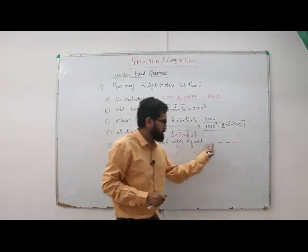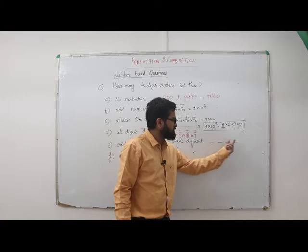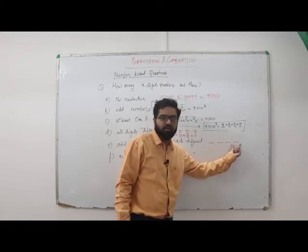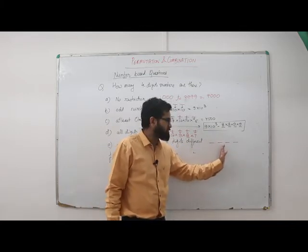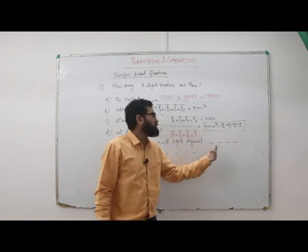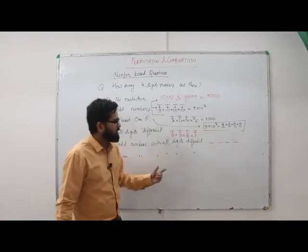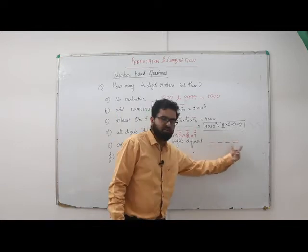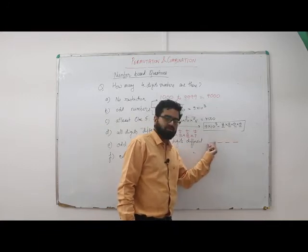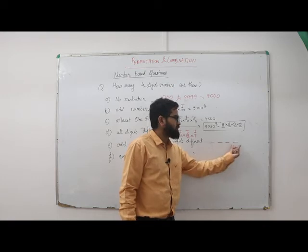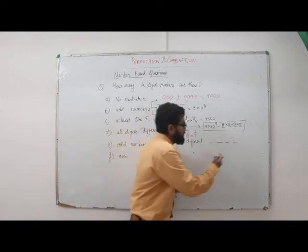Now question e: odd numbers with all digits different. If we start from the leading digit, we don't know yet whether the number will be odd. The number of choices at the units place depends on which digits were used earlier — making it complicated. So instead, we start from the units place, where we can use 1, 3, 5, 7, or 9 — giving 5 choices.